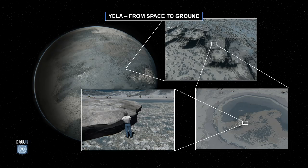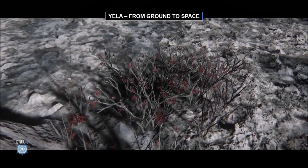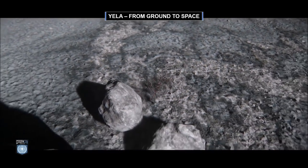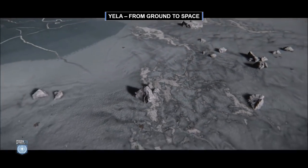Here is the ground-to-space transition for Yela. We show additional elements like icy surface from space. And this is the other way around — zooming out from ground to space.